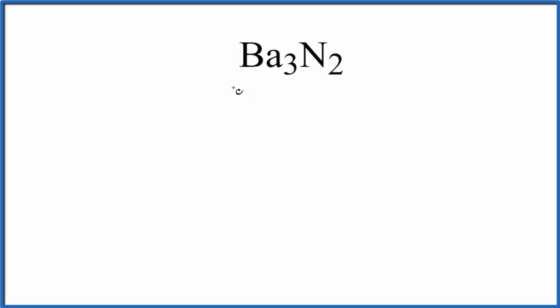In this video, we'll write the Lewis structure for Ba3N2. This is barium nitride, an ionic compound. So let's write our three barium atoms and our two nitrogen atoms.